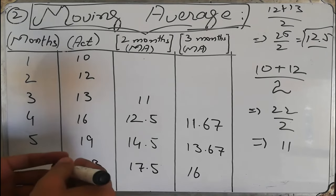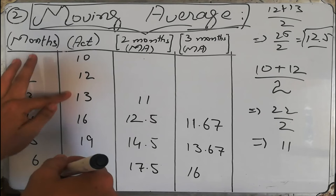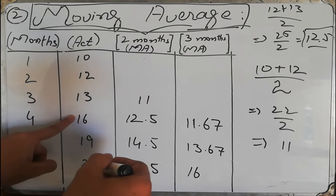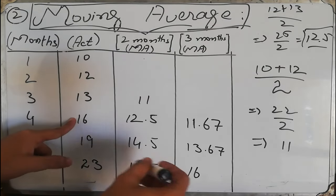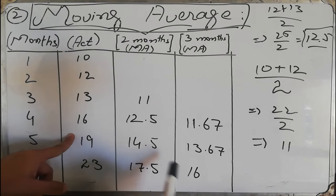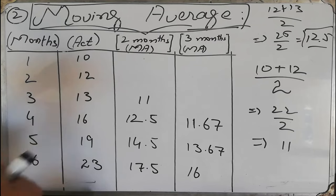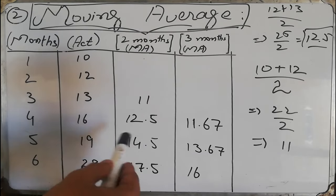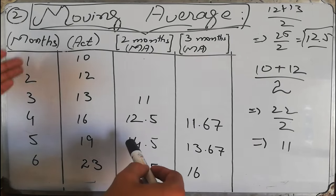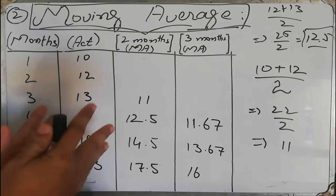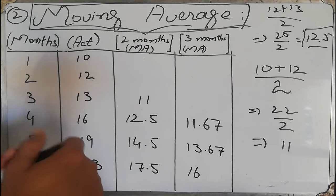This illustrates the 'moving' concept: for the fourth month we averaged these three values, for the fifth month the window shifted, and for the sixth month we used the most recent three. The technique can be extended to four-month or five-month moving averages depending on how many previous data points are available.